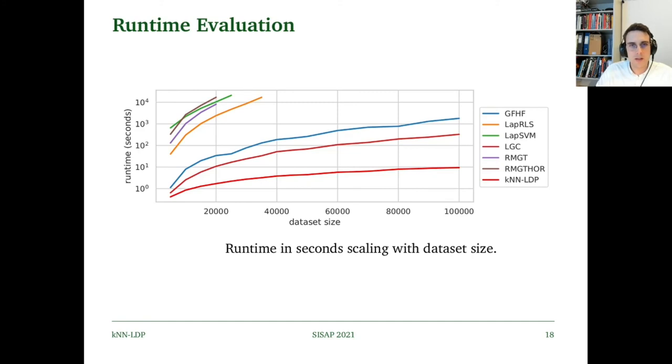Now when we look at our runtime evaluation, we add a bit to the picture. As you can see in the selection of datasets, the largest were about 5,500 instances, and that was due to the runtime of some of the algorithms. In the top here we can see RMGT, RMGT-Thor, LapSVM, and LapRLS.